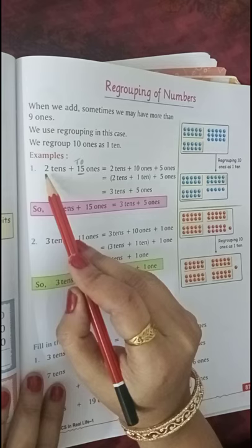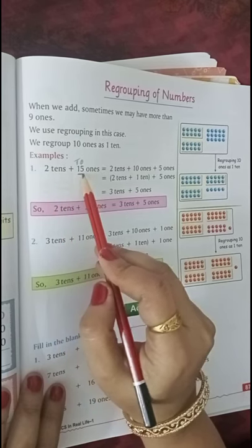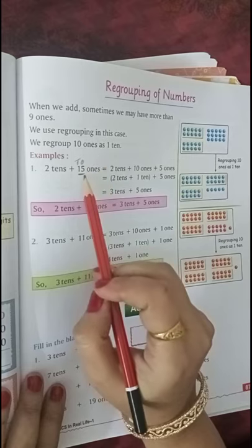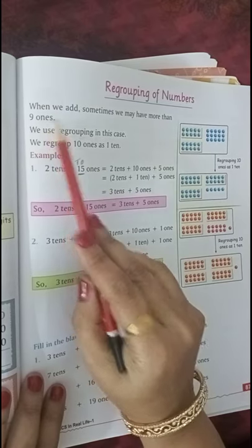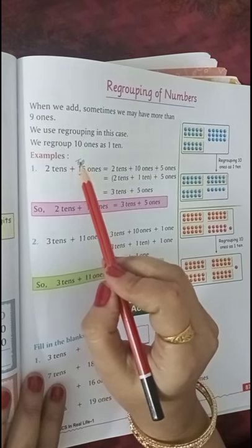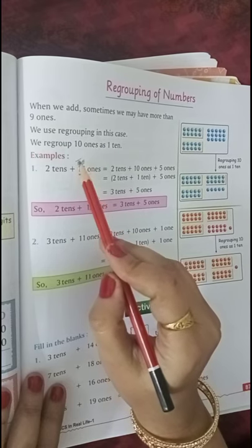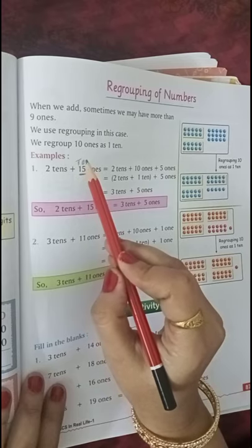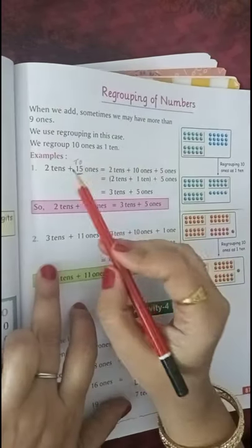Look at the example. 2 tens plus 15 ones. This 15 ones are more than 9 ones. So we have to do regrouping. 1 ten and 5 ones.